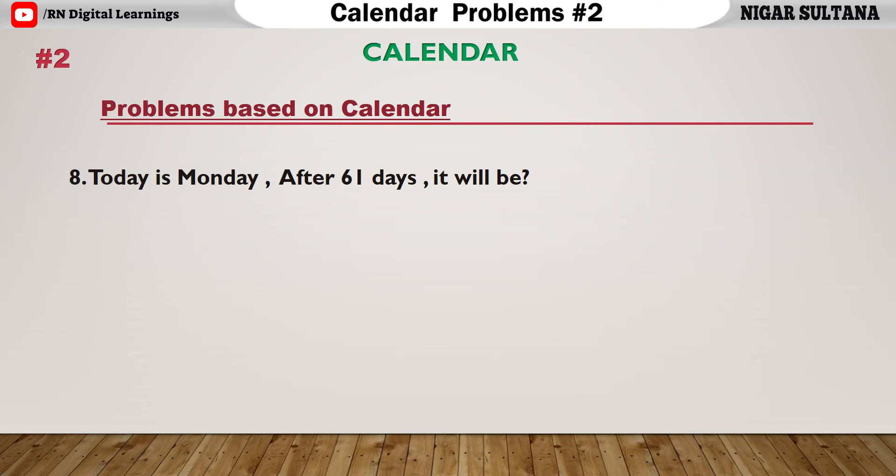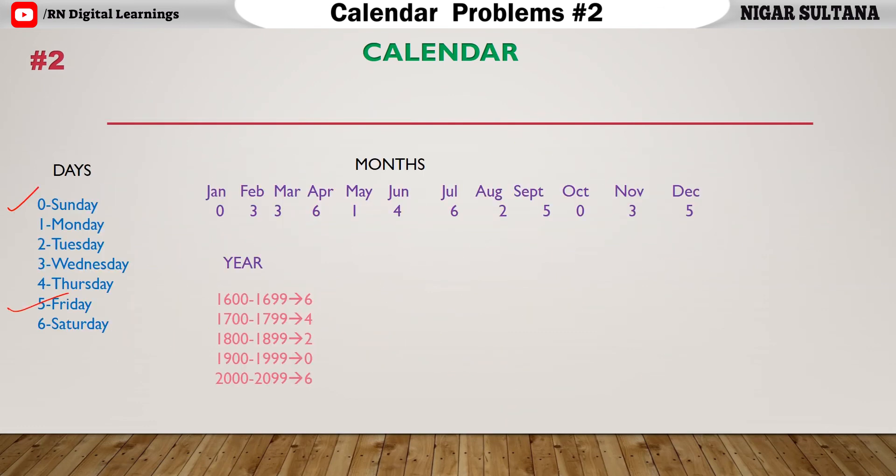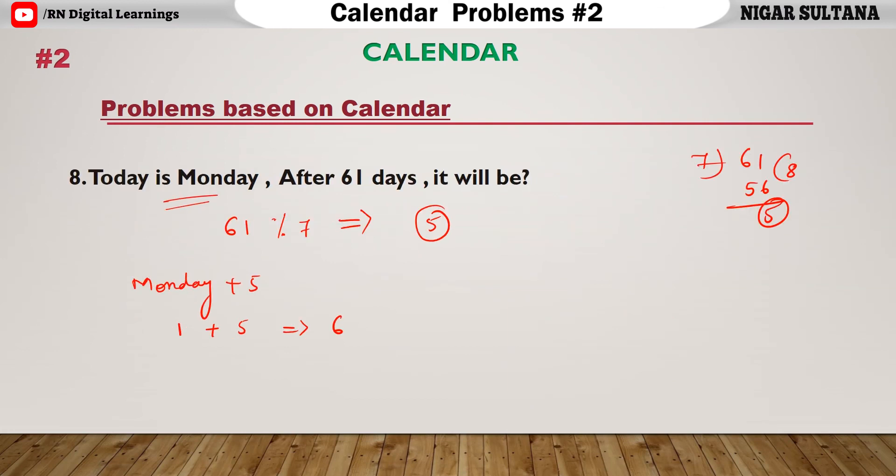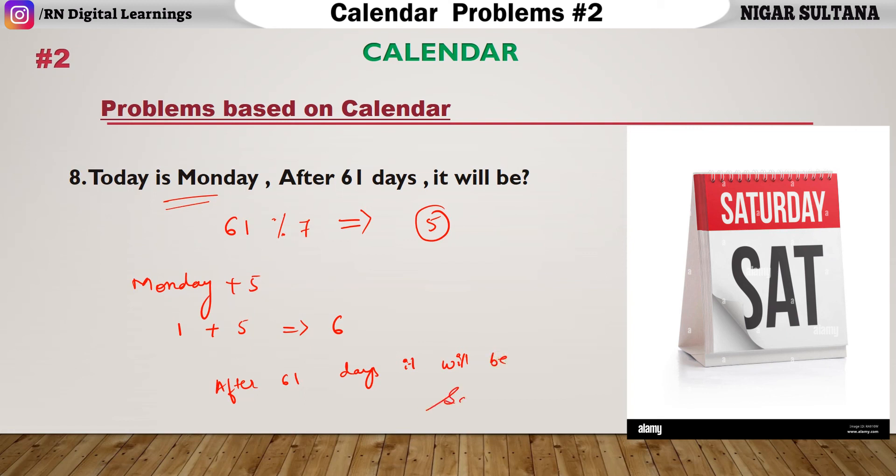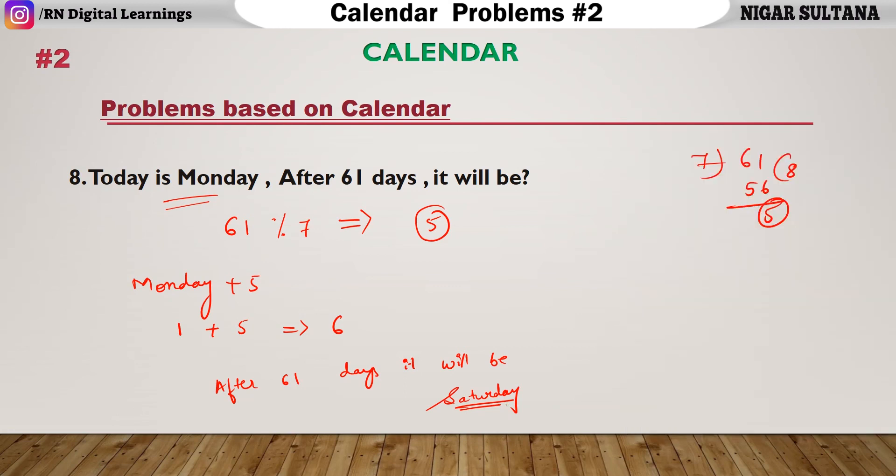Next problem is, today is Monday. After 61 days, it will be what? Today is Monday, we know. After 61 days, first, let's divide this 61 by 7 because again that day will be the same day as Monday. What will be the remainder? You will get 5 because 8 times 7 is 56, remainder is 5. So, from Monday, add this 5. What is the value of Monday? It is 1. 1 plus 5 is 6. What is 6? 6 indicates it is Saturday. After 61 days, it will be Saturday. It is very easy to find out this.